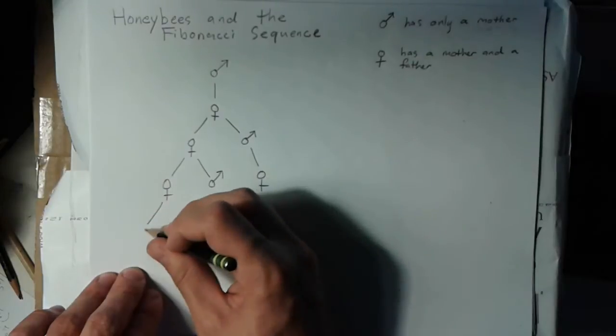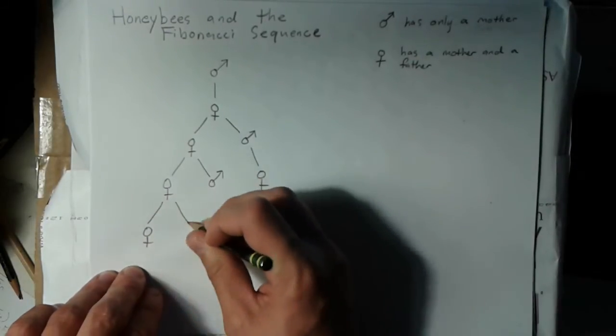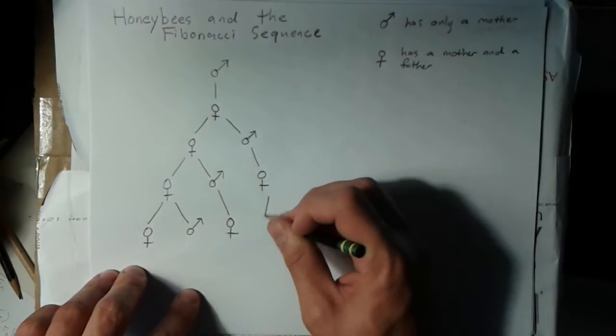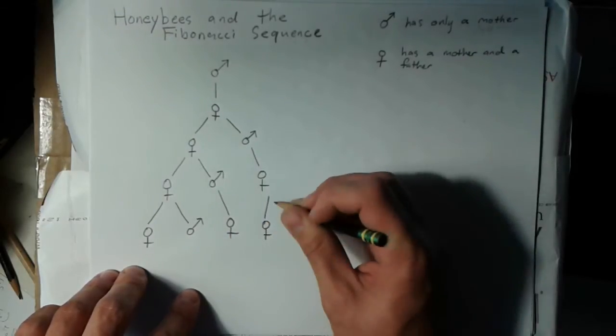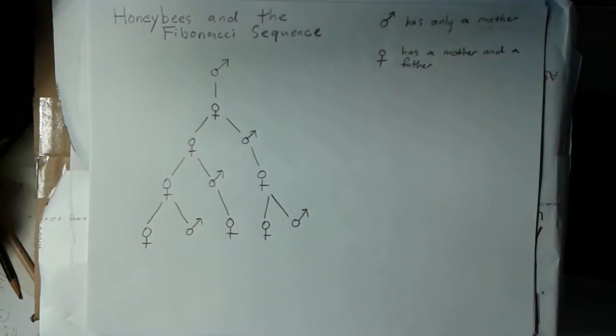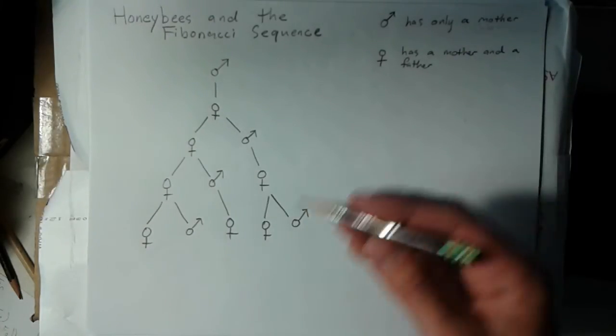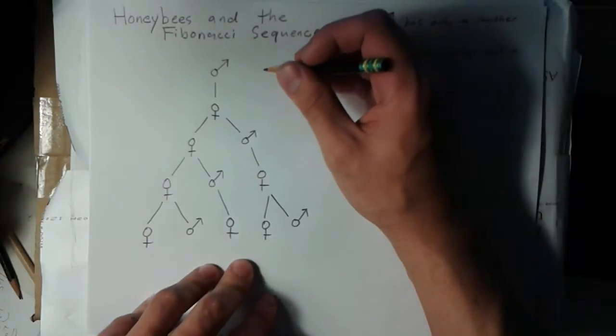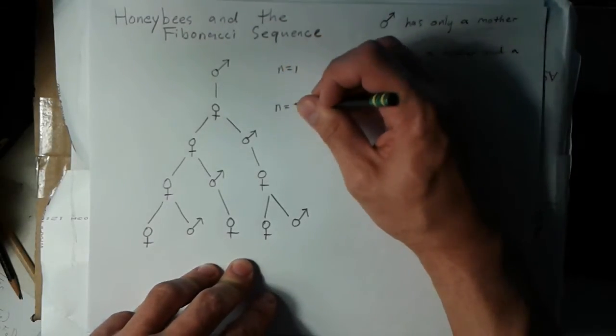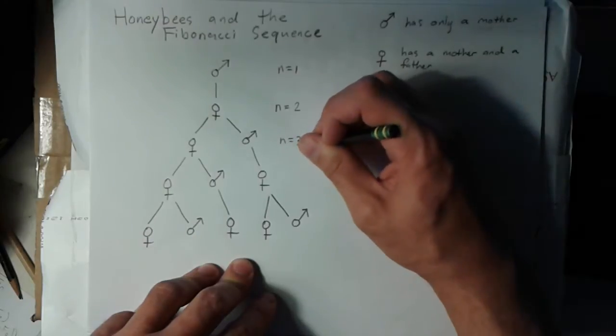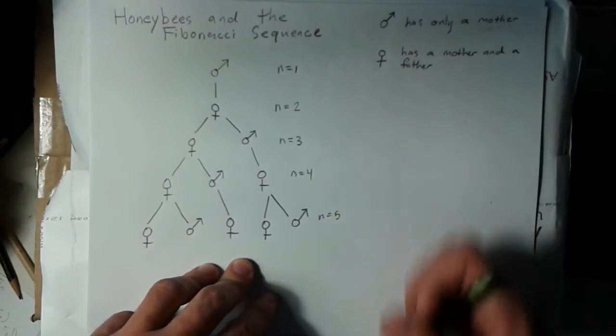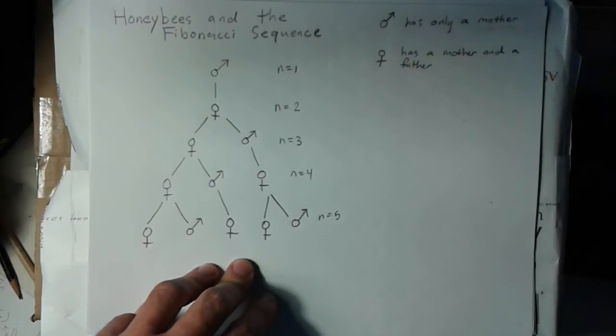This drone had only a mother, this had mother and father, only a mother, and here we had another mother and a father. If we wanted to look at how many bees are there in each generation, I could call this generation 1, so I'll say n equals 1, this is 2, 3, 4.